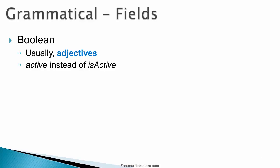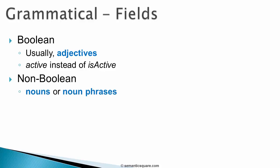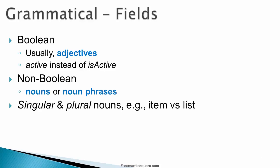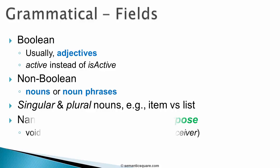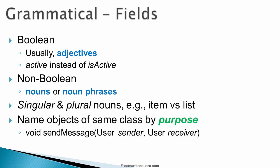For Boolean fields, adjectives are usually used — for example, use 'active' rather than 'isActive'. For non-Boolean fields, nouns or noun phrases are common. For data structures like arrays, use plural nouns for the array itself and singular nouns for its elements. When multiple objects of the same class are used at the same place, name them by their purpose — for instance, name them 'sender' and 'receiver' when one user sends a message to another.